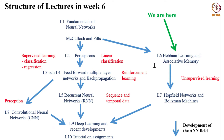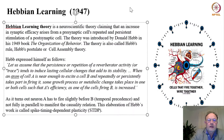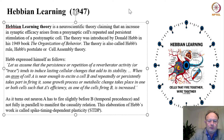We will first turn to something more specific which we call Hebbian learning. Hebbian learning theory is a neuroscientific theory claiming that an increase in synaptic efficacy arises from a presynaptic cell's repeated and persistent stimulation of a postsynaptic cell. This theory was introduced by Donald Hebb in his 1949 book 'The Organization of Behavior.' The theory is also called Hebb's rule, Hebb's postulate, or cell assembly theory.